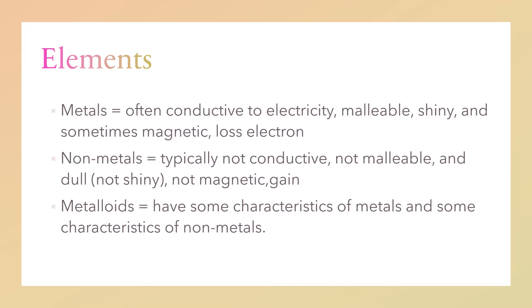Metals are often conductive to electricity. They are malleable, shiny, and sometimes magnetic. They also tend to lose electrons. Non-metals are typically not conductive, not malleable, and dull. When we say not conductive, it is not conductive to electricity. The flow of electricity is very poor on non-metals. Metalloids have some characteristics of metals and some characteristics of non-metals. Elements that fall under this category have both characteristics. That's why they are called metalloids.